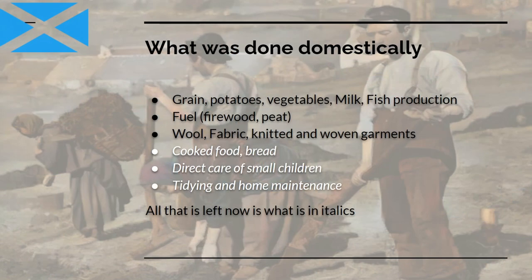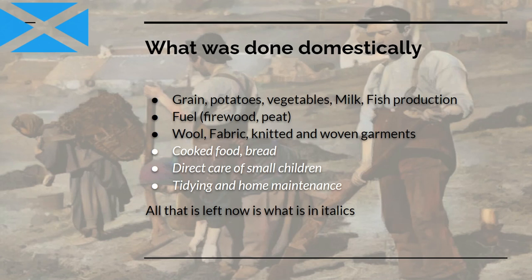Let's look at what used to be done domestically. If we go back — in some areas in Scotland a hundred years, some areas longer than that — you would have had grain, potatoes, vegetables, milk and fish produced in the domestic economy. Fuels such as firewood and peat were being produced in the domestic economy. Wool fabrics, whether knitted or woven, were produced in the domestic economy. Obviously cooked food including baked food, direct care of small children, maintenance, tidying of the home, etc.